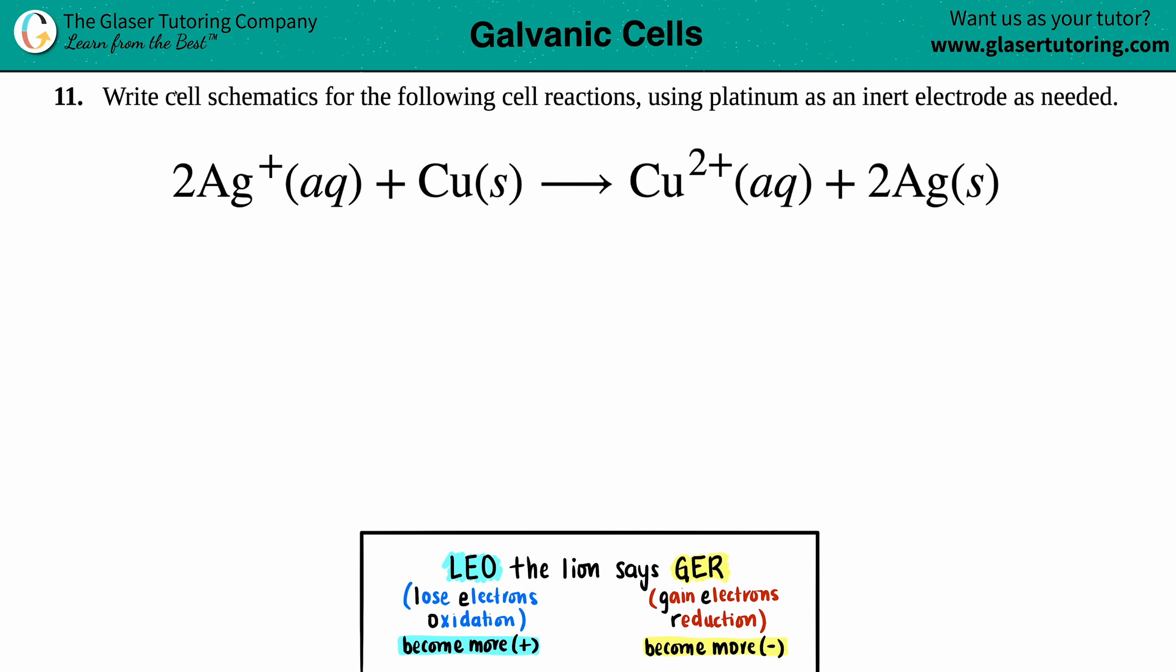Number 11, write cell schematics for the following cell reactions using platinum as an inert electrode as needed. Our equation here is 2Ag⁺ aqueous plus Cu solid yields Cu²⁺ aqueous plus 2Ag solid. So we have to draw those cell schematics, or in this case we're only drawing one schematic.